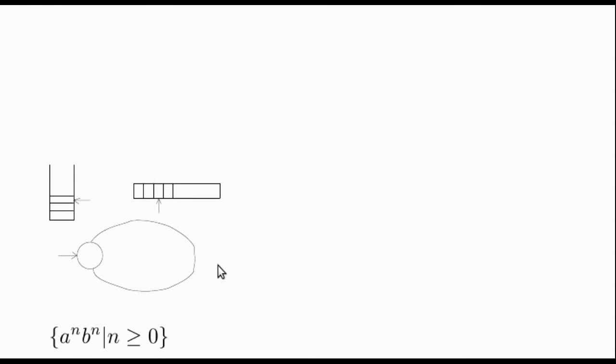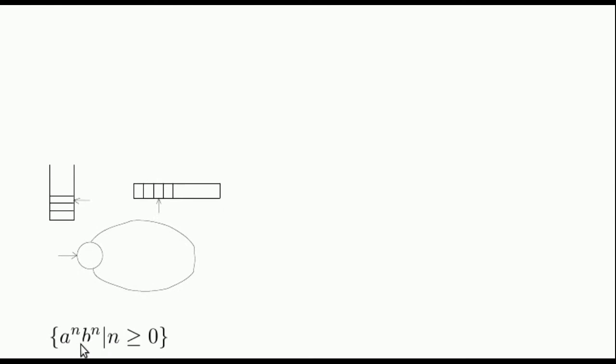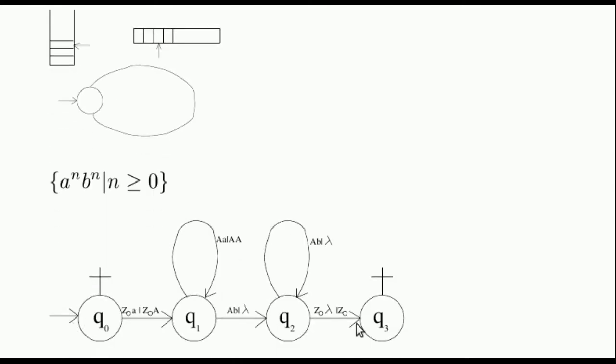Let's see an example. We want to recognize the language a^n b^n. Here we have the pushdown automaton that recognizes it, according to the following interpretation.